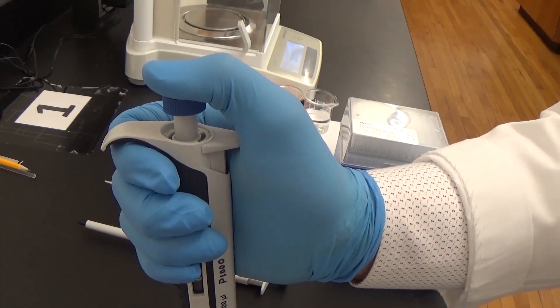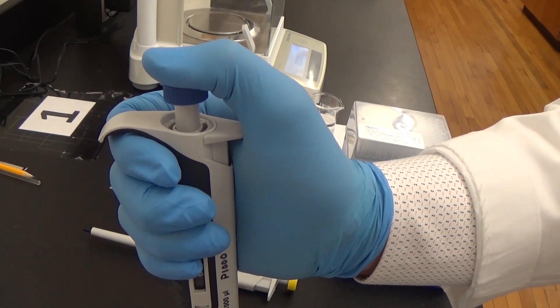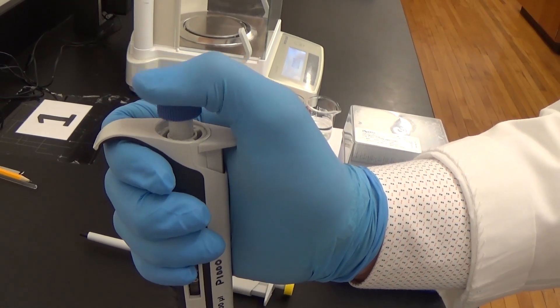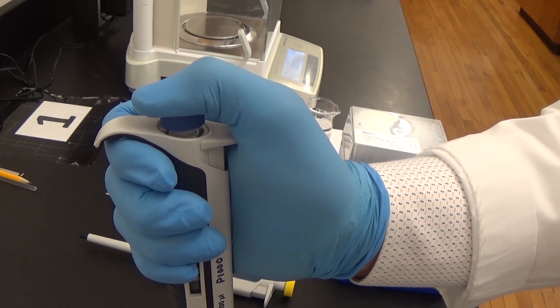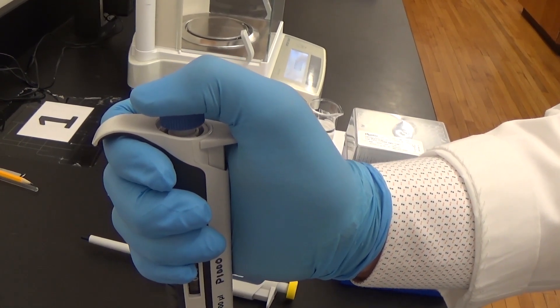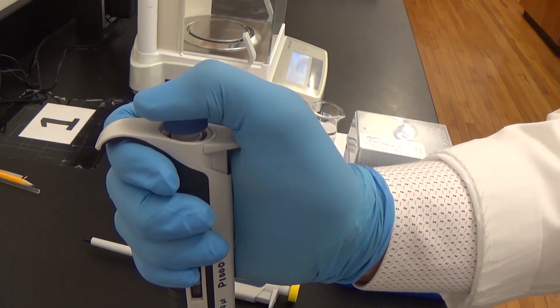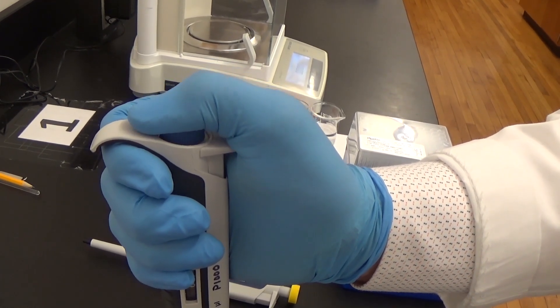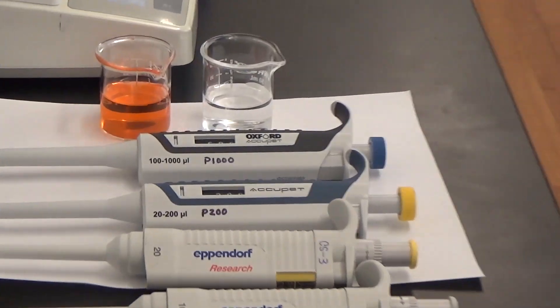The plunger button will stop at two different positions when it is depressed. Push the plunger button down slowly to the first point of resistance. This is the first stop. Then, push the plunger down beyond the initial resistance until it is in contact with the body of the pipette. This is the second stop.